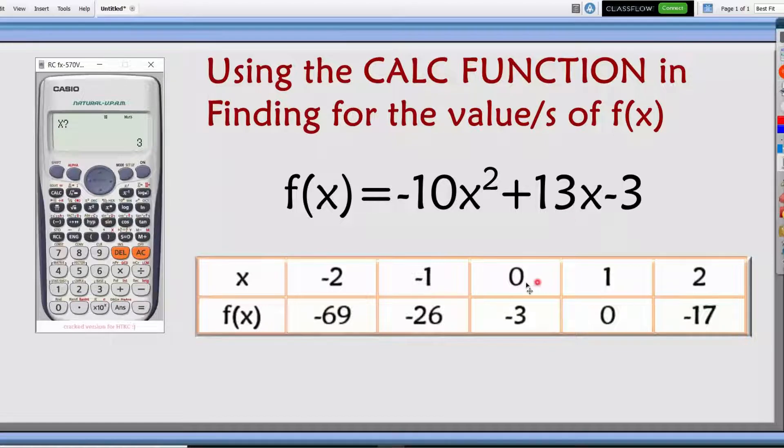So for example, we want to choose 0. So I will just press 0 equals, as we can see, we got already the value of negative 3. If we are only looking for one value of f of x.